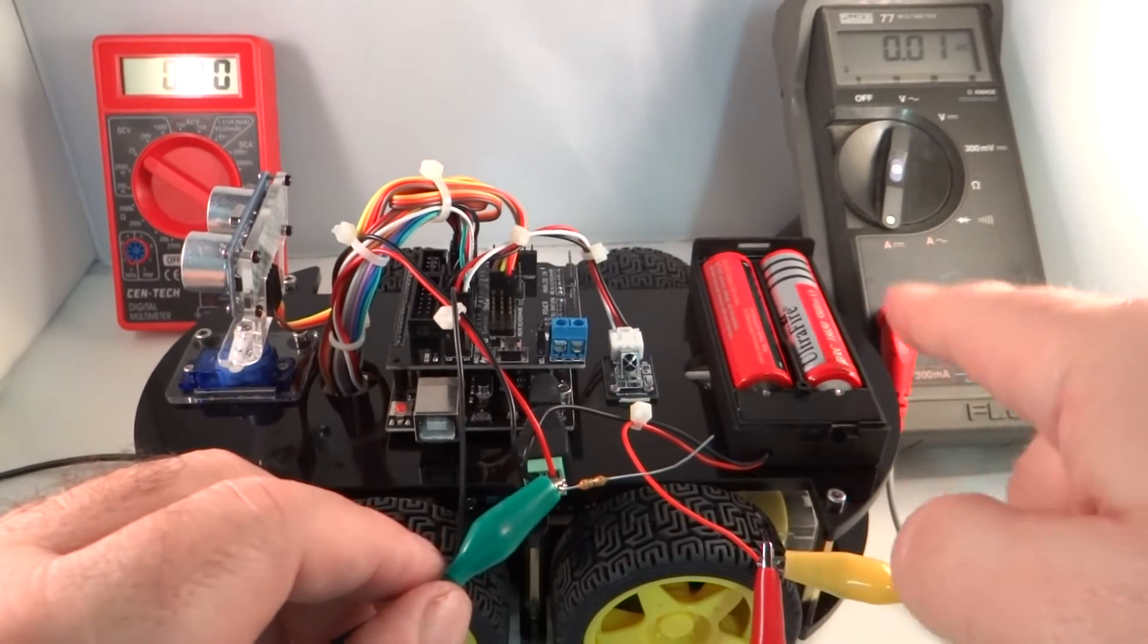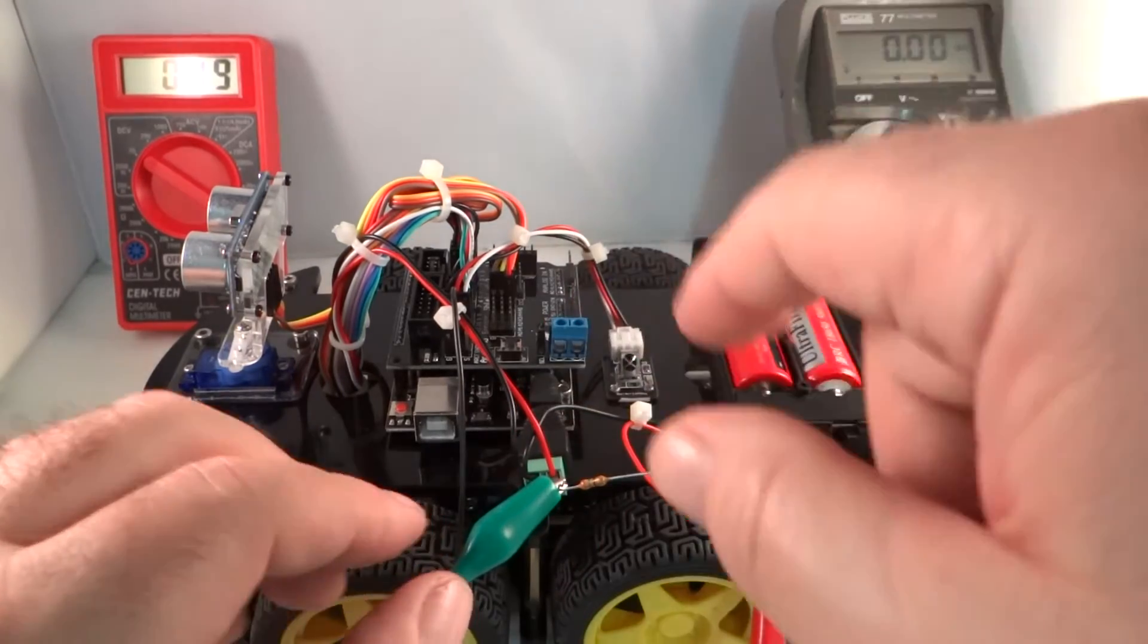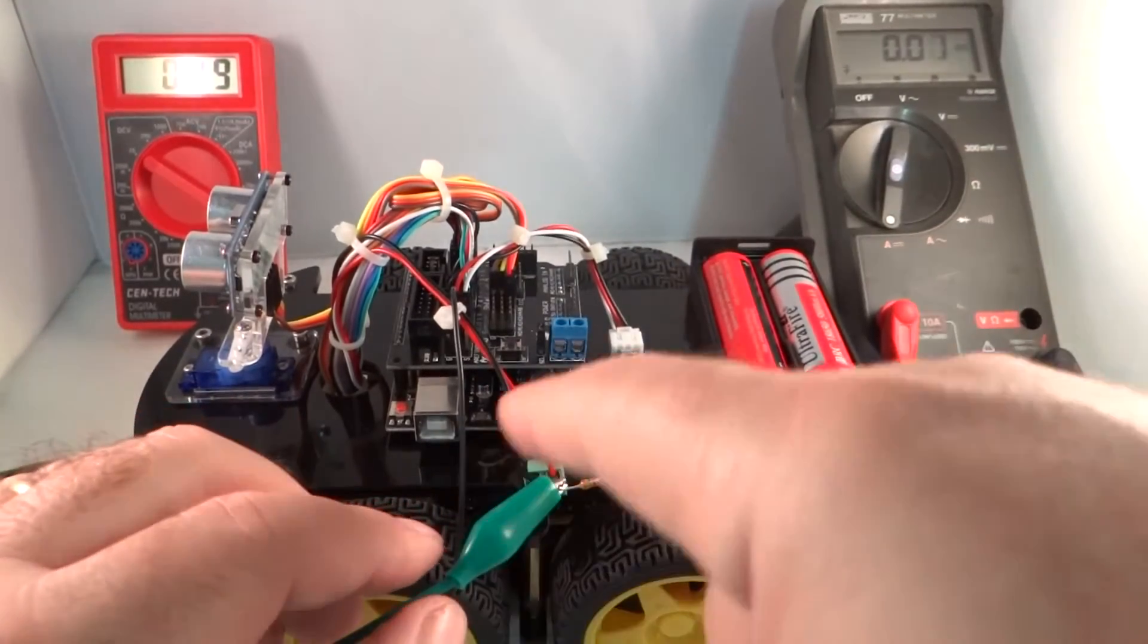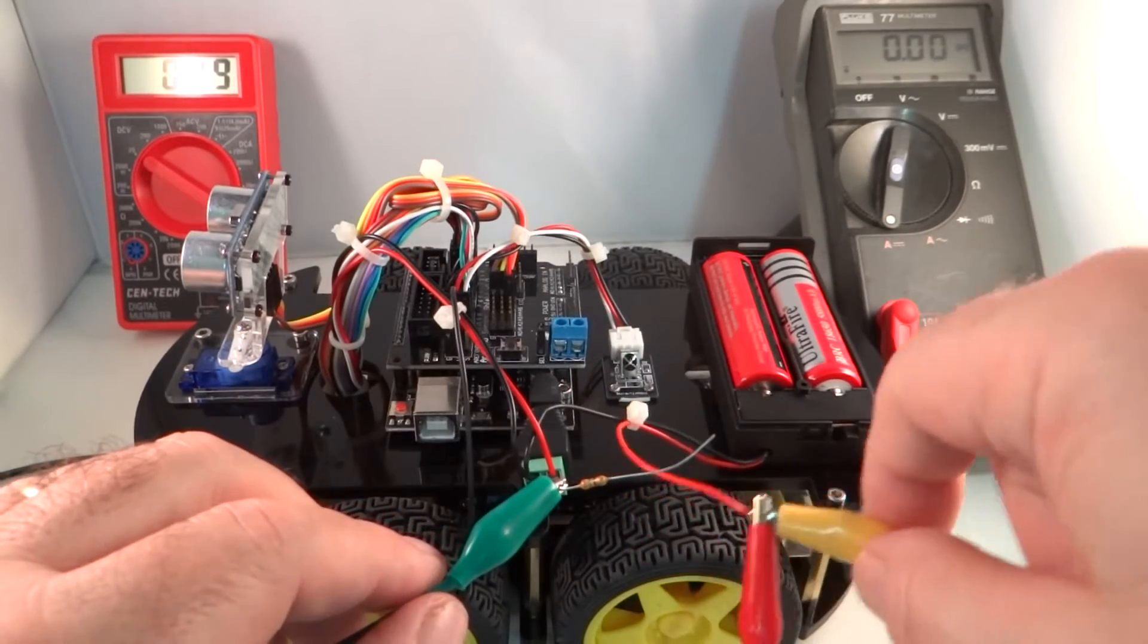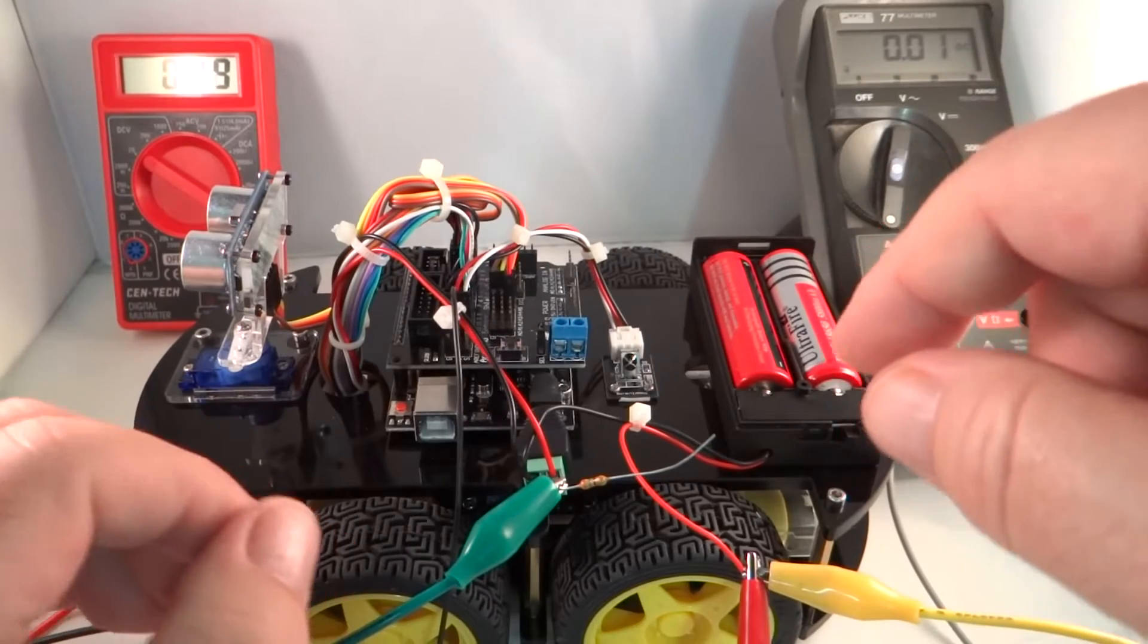So it's going through the ammeter back into the car both to the motors and to the Arduino. So that's the full current path from the batteries into the car and the computer and all of the loads.